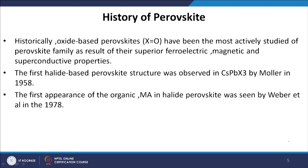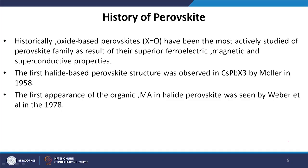Historically, oxide-based perovskites have been the most actively studied of the perovskite family as a result of their superior ferroelectric, magnetic, and superconductive properties. In earlier days when superconductivity was in its infancy, many varieties of perovskite materials were studied for room temperature superconductivity. The first halide-based perovskite structure was observed in cesium lead halide, CsPbX3, where X stands for different halogen compounds, by Møller in 1958.